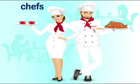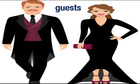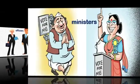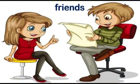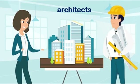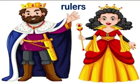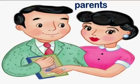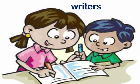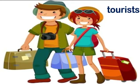A noun that refers to both male and female is known as common gender. Examples include: doctors, heroes, chefs, passengers, singers, guests, cousins, officers, ministers, villagers, students, architects, scientists, teachers, rulers, dancers, parents, artists, writers, players, tourists, and pilots.